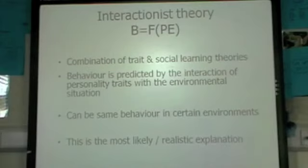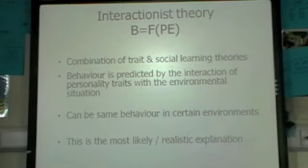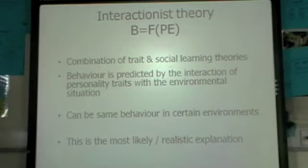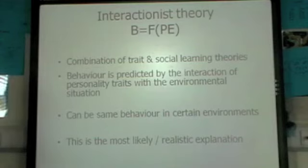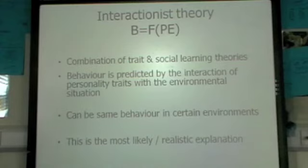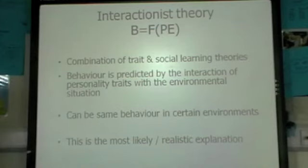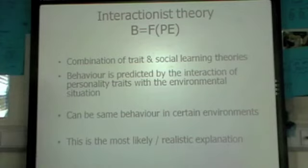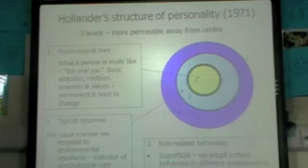Next is interactionist theory, where behavior is the function of both personality and environment — B equals F(P+E). It combines trait theory and social learning theory. In different environments you might show different behavior, but in the same environment each time you would show the same behavior. Interactionist theory is seen as the most likely explanation because it combines the best elements of both theories.